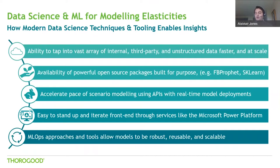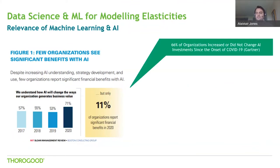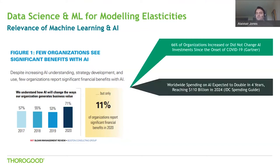We have the ability to do scenario modeling thanks to real-time model deployments. Front ends, such as the one showcased in today's demo, are easy to stand up and iterate on thanks to offerings such as Microsoft's Power Apps. MLOps approaches allow investments in demand elasticity modeling to be more robust, reusable, and scalable than ever before. An MIT Sloan BCG survey revealed that in 2020, 71% of organizations surveyed understand that AI changes the way their business generates value, yet only 11% reported significant financial benefits from the use of AI. Additionally, 66% of companies increased or did not change their AI investment since the onset of COVID-19, so it remains a priority. The rate of investment in the space is growing drastically, reaching over an estimated $110 billion by 2024.